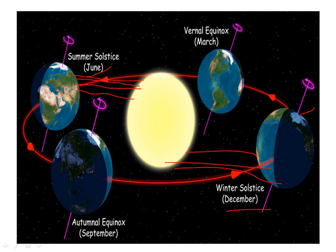Now let's talk about equinox. What happens here? On March 21 and September 23, the sun's rays fall directly on half of the earth, so half of the earth experiences day and the opposite half experiences night.